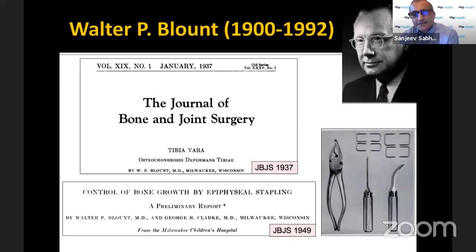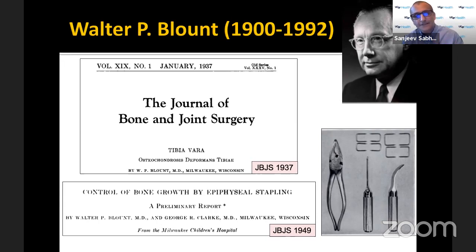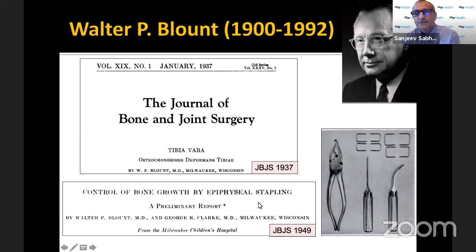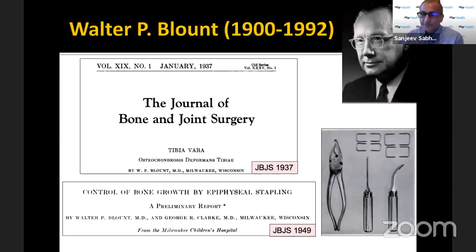Blount, back in 1937, actually said most of what we know right now. The only thing is he just looked at it in the frontal plane and didn't really talk more about the sagittal and the axial plane. A few years later he came up with the Blount staple, which has become popular lately with guided growth and a slightly different implant.